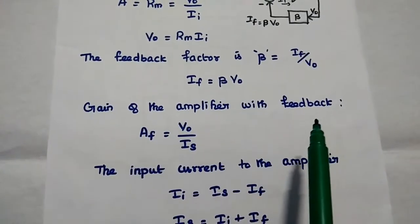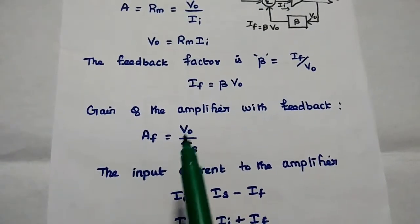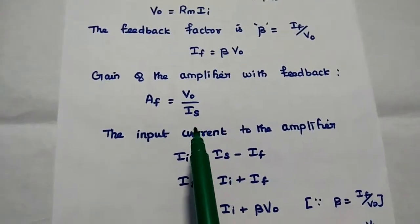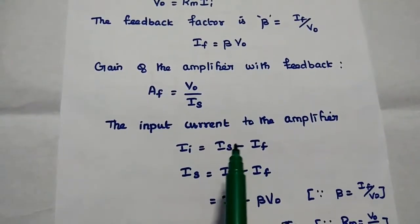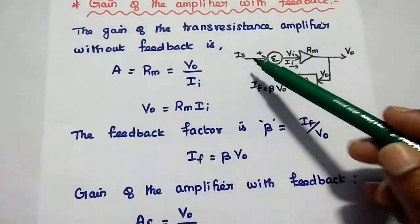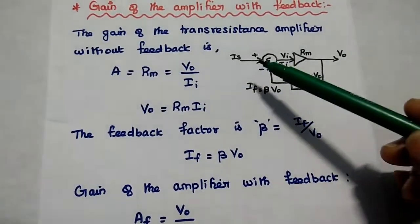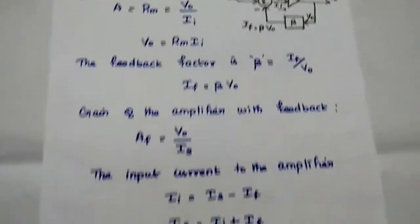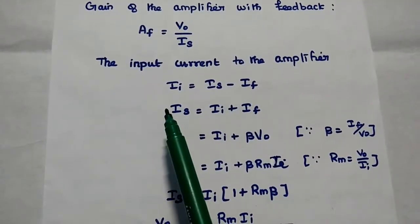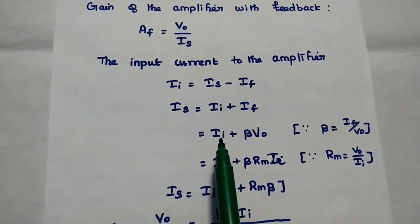The gain of the amplifier with feedback, AF, equals the output voltage divided by the source input current. We find the value of IS: the input current II to the amplifier equals IS minus IF, since we are using negative feedback. So IS equals II plus IF.